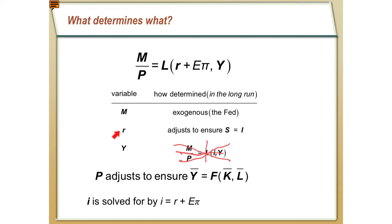GDP in the long run is determined by Y = F(K, L). In this model, we assume K and L are fixed, so output is also fixed — output is determined by the production function in the long run. The price level is the thing that adjusts to make sure everything fits together. Later in the semester, when we talk about the aggregate demand and aggregate supply model, we'll see this more explicitly — the price level adjusts to ensure aggregate demand equals aggregate supply.